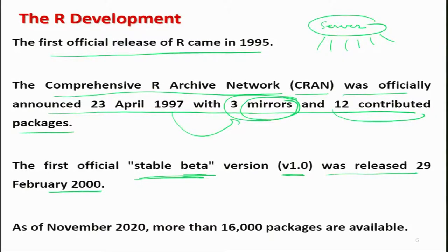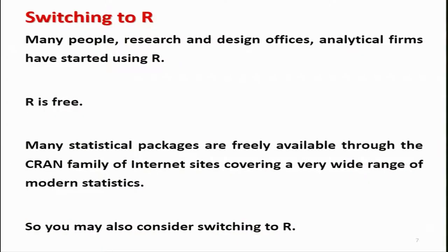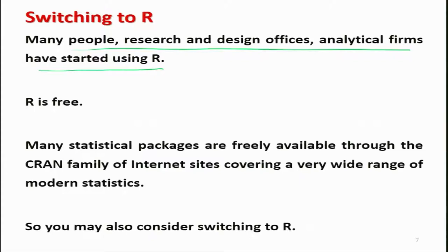It took almost a decade to get a stable version of this free software. Based on the data I have, R software began with 12 contributed packages, which grew to more than 16,000 packages available as of November 2020. You can see the growth in the last two decades — 16,000 packages means you can do 16,000 different things from the same software. Many research offices, design offices, and analytical firms got motivated, got confident that R was providing good results, and started switching to R software. So the question now is: why should you switch to R?